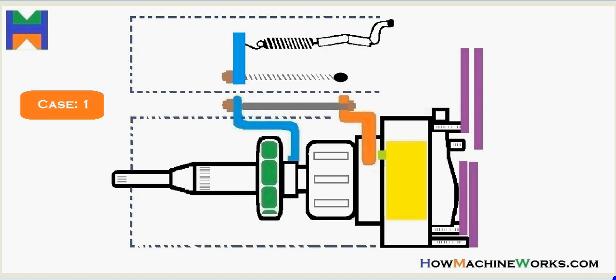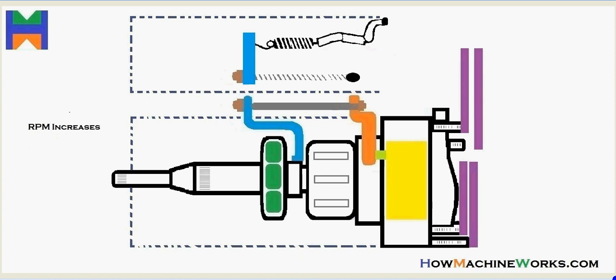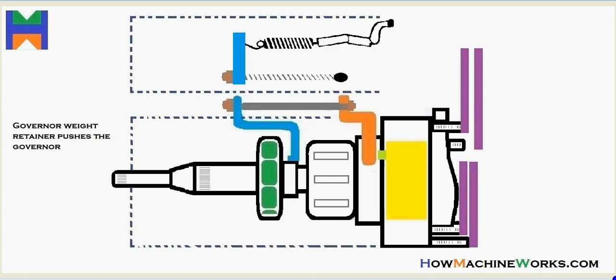So let's see the animation. Case 1 is when RPM increases. When the vehicle increases its RPM, it gets reflected on the governor weight retainers. So that's in green.